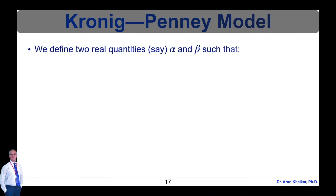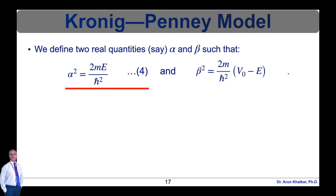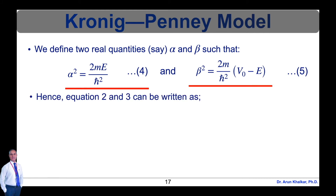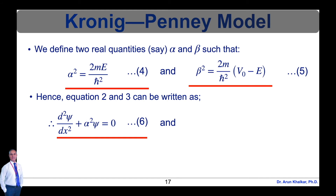We define two real quantities, alpha and beta, such that α² = 2mE/ℏ² (equation 4) and β² = (2m/ℏ²)(V0 − E) (equation 5). Hence, equations 2 and 3 can be rewritten as: d²ψ/dx² + α²ψ = 0 for 0 < x < a (equation 6), and d²ψ/dx² − β²ψ = 0 for −b < x < 0 (equation 7).